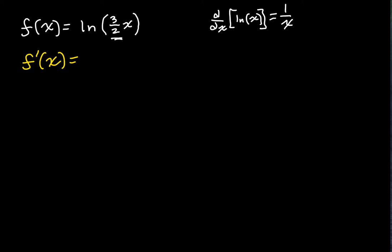So what's the first step we do? What does the chain rule say? I'm not going to pull it up this time. We're just going to think. We need to take the derivative of the outer function. What's our outer function here? Our outer function is natural log. Our inner function is 3 halves times x.